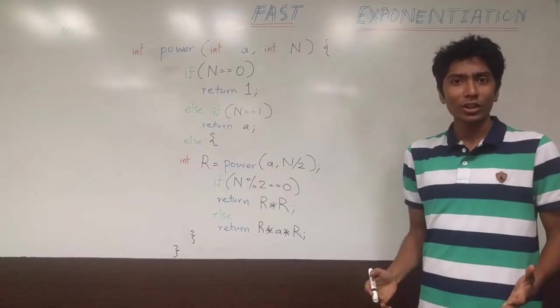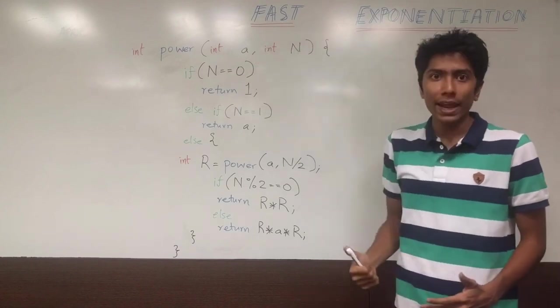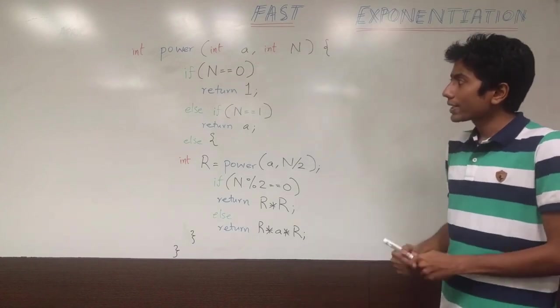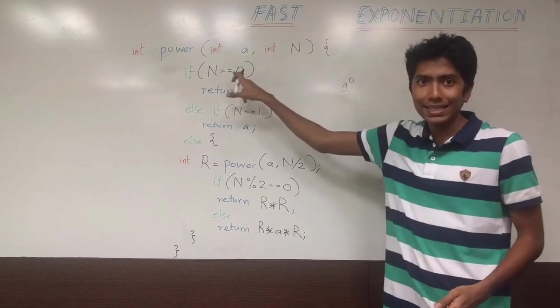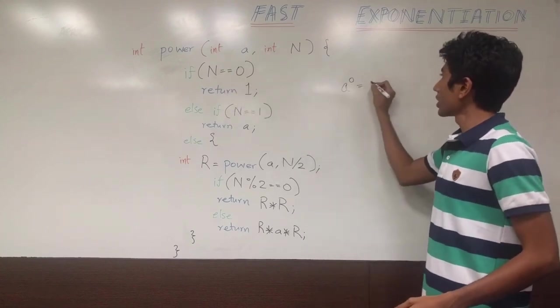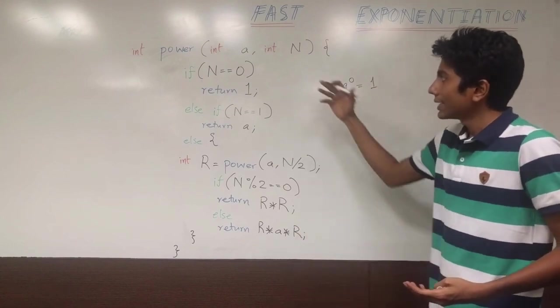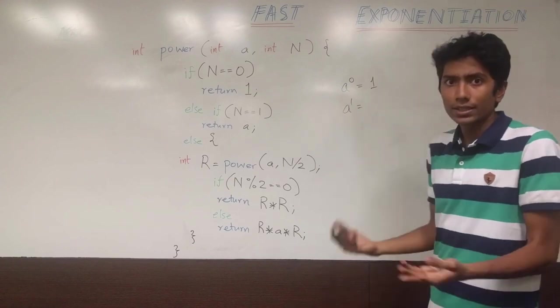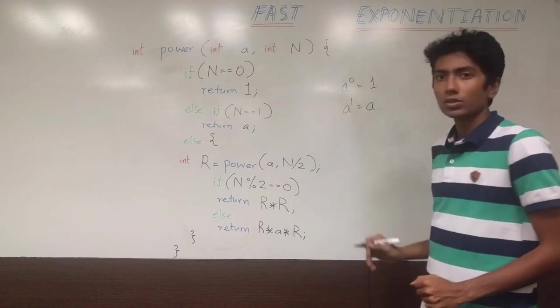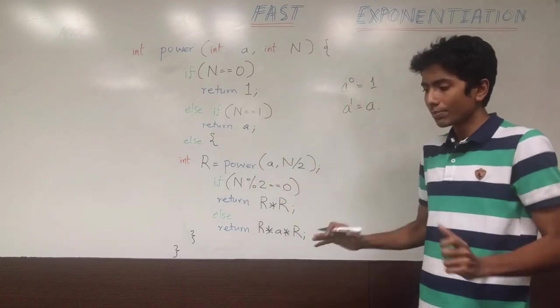So now let's have a look at the code. We have power which takes this base a and an exponent n. What happens if a raised to the power 0 is given to us? That would mean n is equal to 0. So we should return 1 because anything raised to the power 0 is 1. Secondly, if a raised to the power 1 comes in, that is equal to a itself. So that's what we are doing over here. If n is equal to 1, then we return a. Simple base condition done.